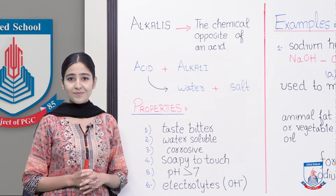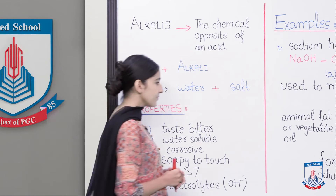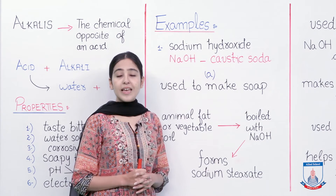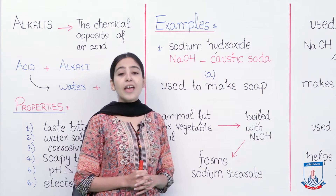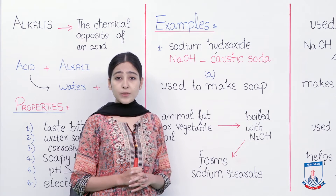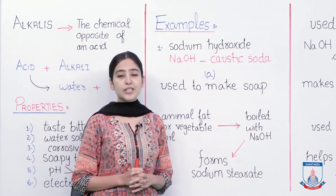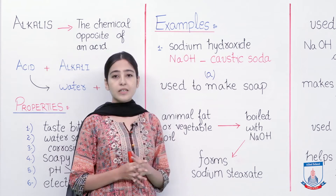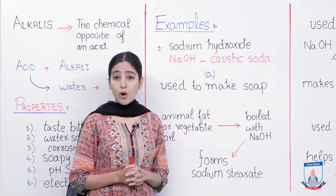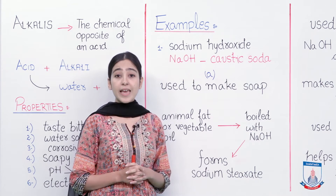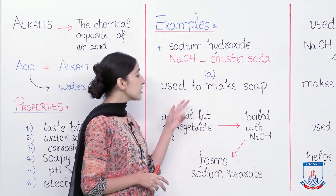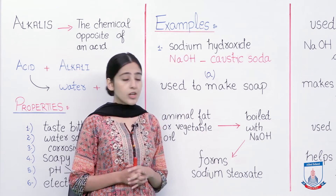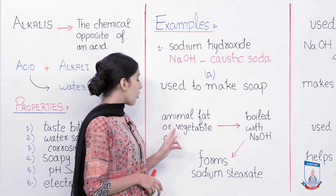Now let us move on and discuss some examples for better understanding. The first example is sodium hydroxide. I will be discussing its industrial uses — sodium hydroxide, named caustic soda with the formula NaOH, is used to make soap.